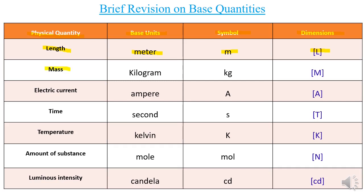For electric current, its base unit is the ampere, its symbol is capital A, and its dimensions are capital A. You could also use capital I — it depends on you — but for our calculations we will always be using capital A. For time, its base unit is the second, its symbol is little s, and its dimensions are capital T.